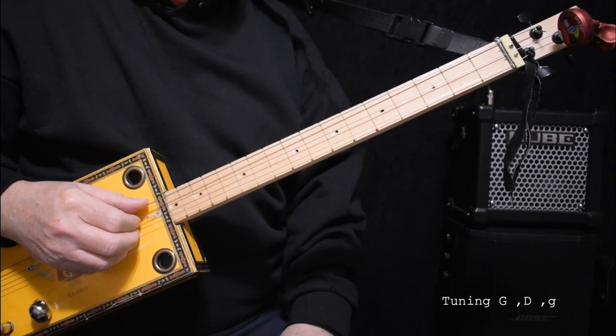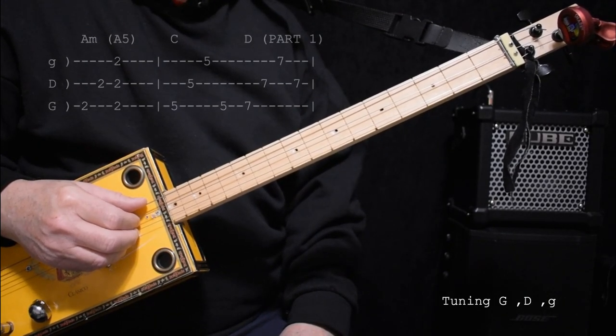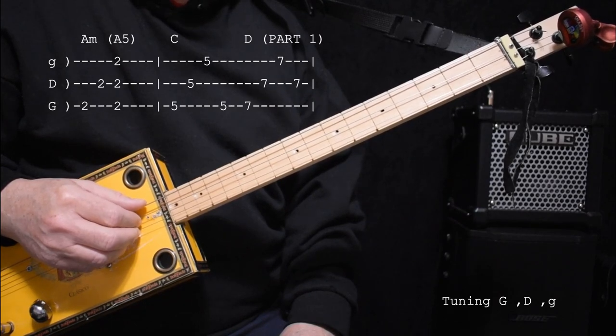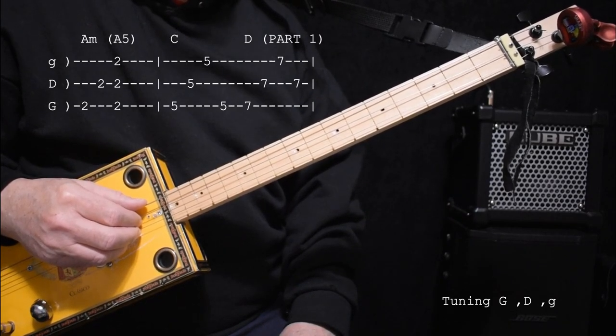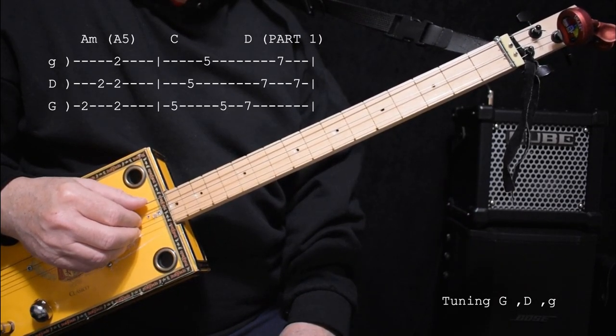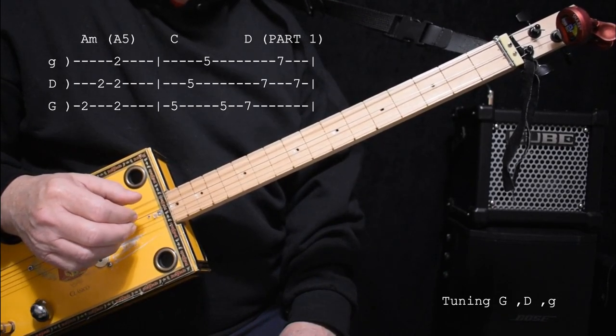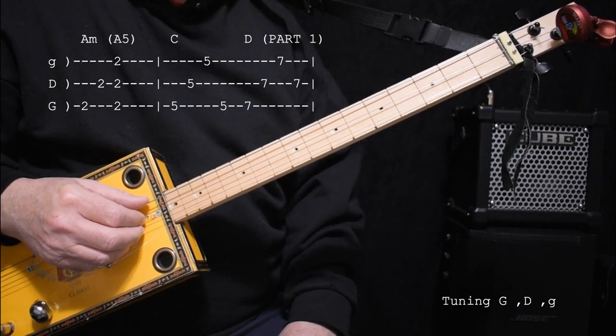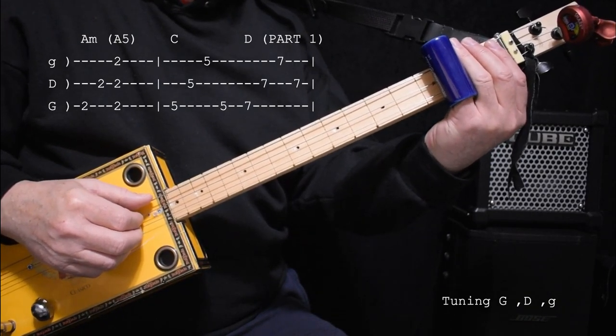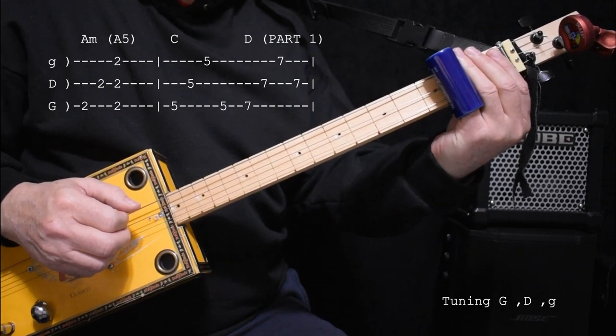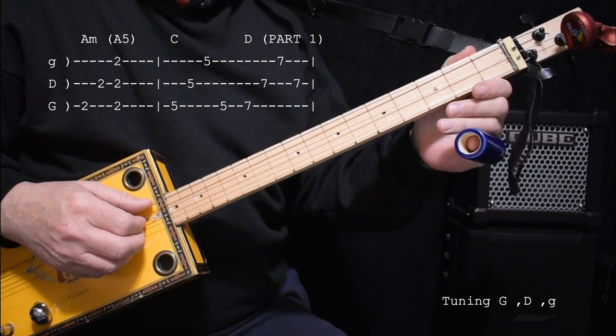All right, so the first chord is A minor, but because of how we're tuned, it's called a 1-5-1 tuning. This is a G chord, G5 chord. So if we go up to the second fret, that would make it an A5 chord. And that's the first chord of our song.